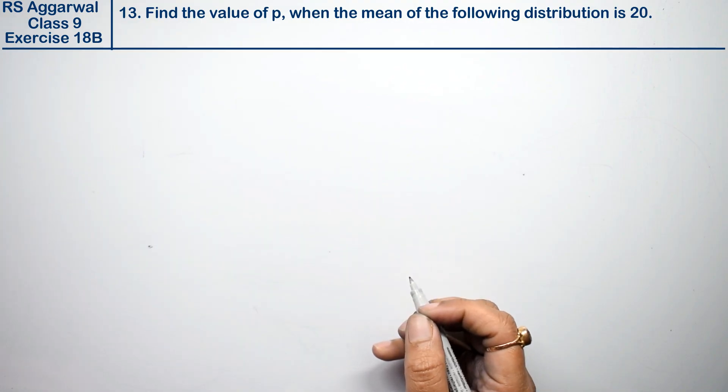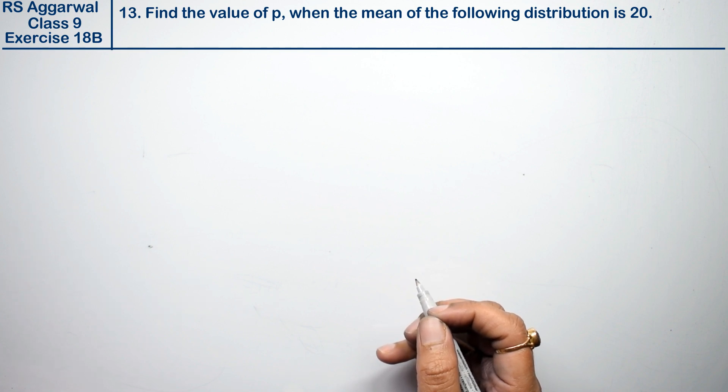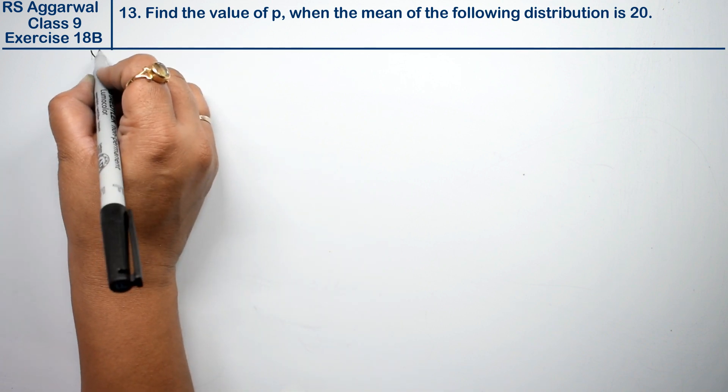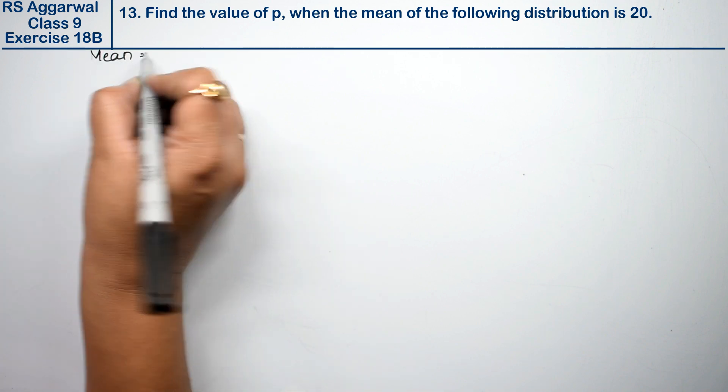Let's do question number 13 of exercise 18B: mean, median and mode of ungrouped data. Question 13 is find the value of p when the mean of the following distribution is 20. We are given the mean as 20 and we need to find the value of p.